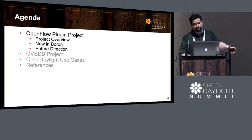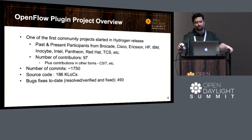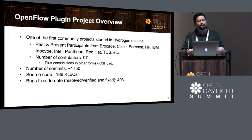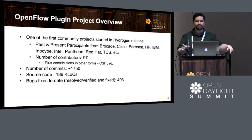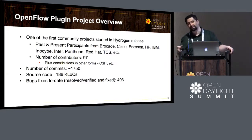As far as the project is concerned, the OpenFlow project — we'll go briefly into the overview of the OpenFlow plugin project, what's new in Boron, and the future direction. The OpenFlow plugin project started in the Hydrogen release and was one of the first community projects. It was started between various vendors, and past and present contributors include people from Brocade, Cisco, Ericsson, HP — basically across the industry. Around 97 developers have put in patches for the OpenFlow plugin project.